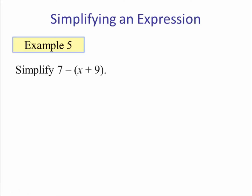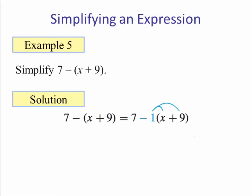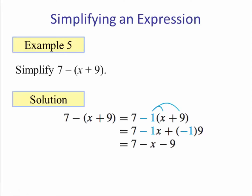Example five: simplify seven minus the quantity x plus nine. We treat the minus as a negative one, so we take negative one times x and negative one times nine, giving us seven minus x minus nine. Combining the constants, we're left with negative x minus two.